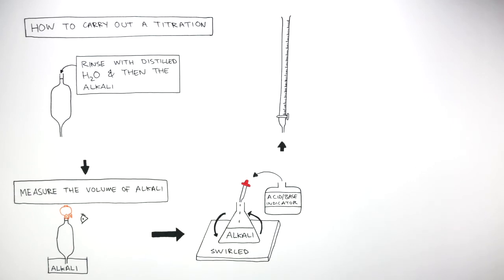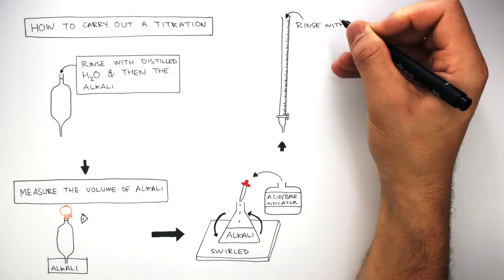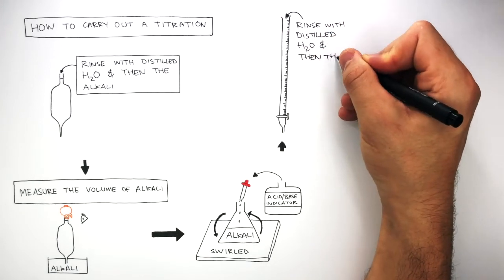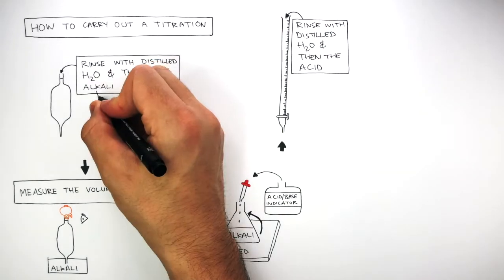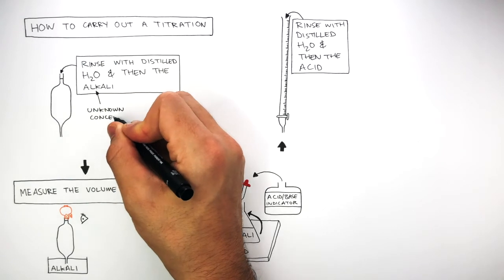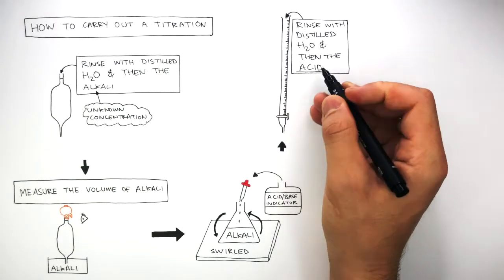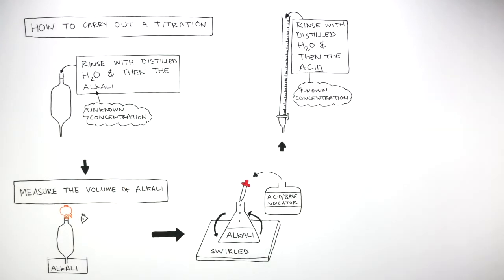In the next stage, the volumetric pipette is rinsed with distilled water and then the acid. Remember the alkali is the unknown concentration and the acid is the known concentration. We're doing this titration to figure out what is the concentration of the alkali.